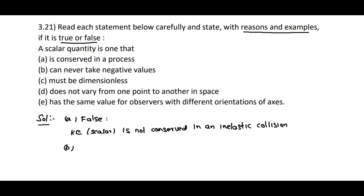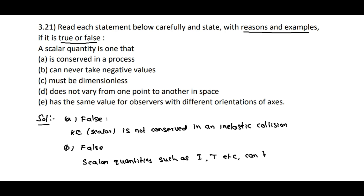Statement B — that scalar quantities cannot take negative values — is false. For example, scalar quantities such as electric current and temperature can take negative values.